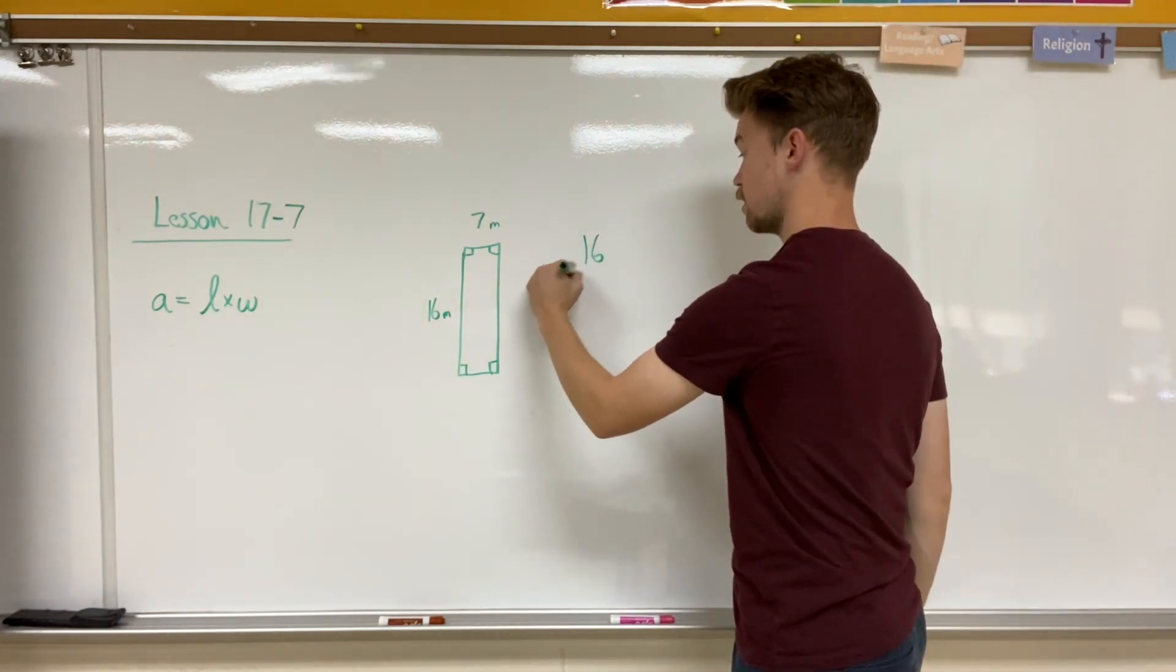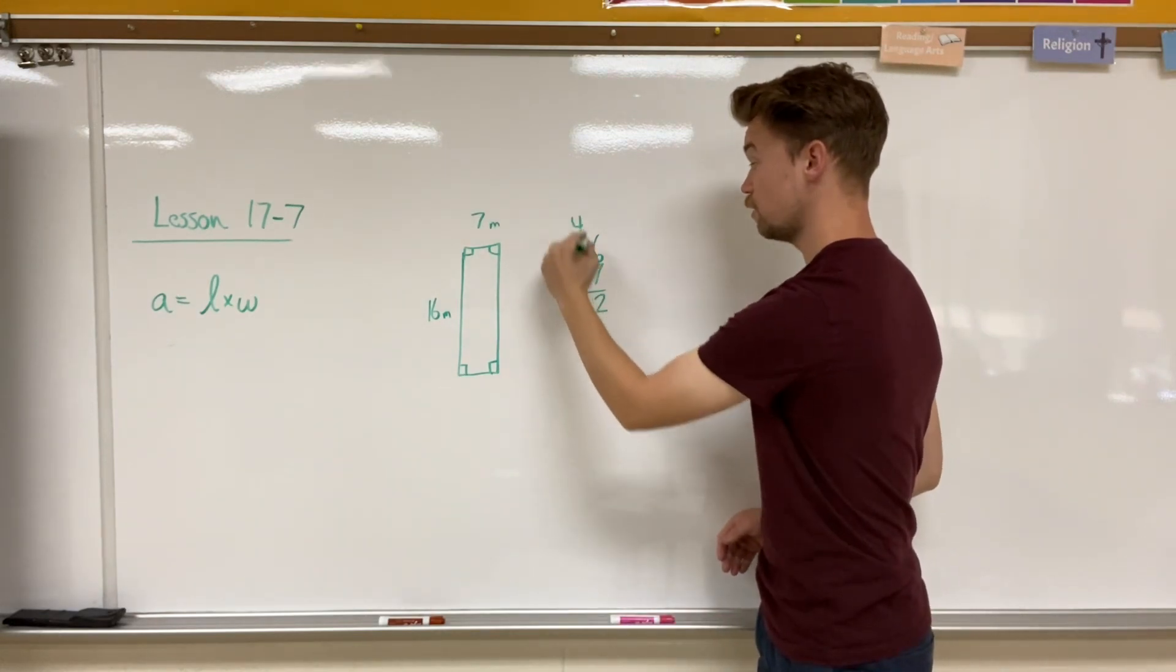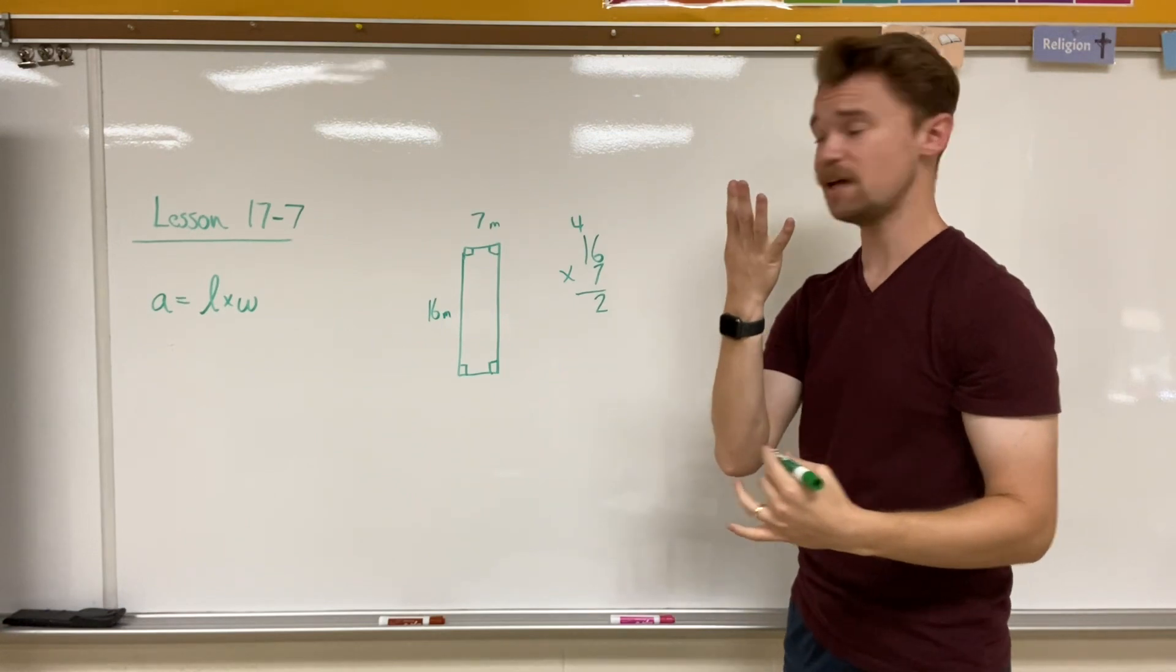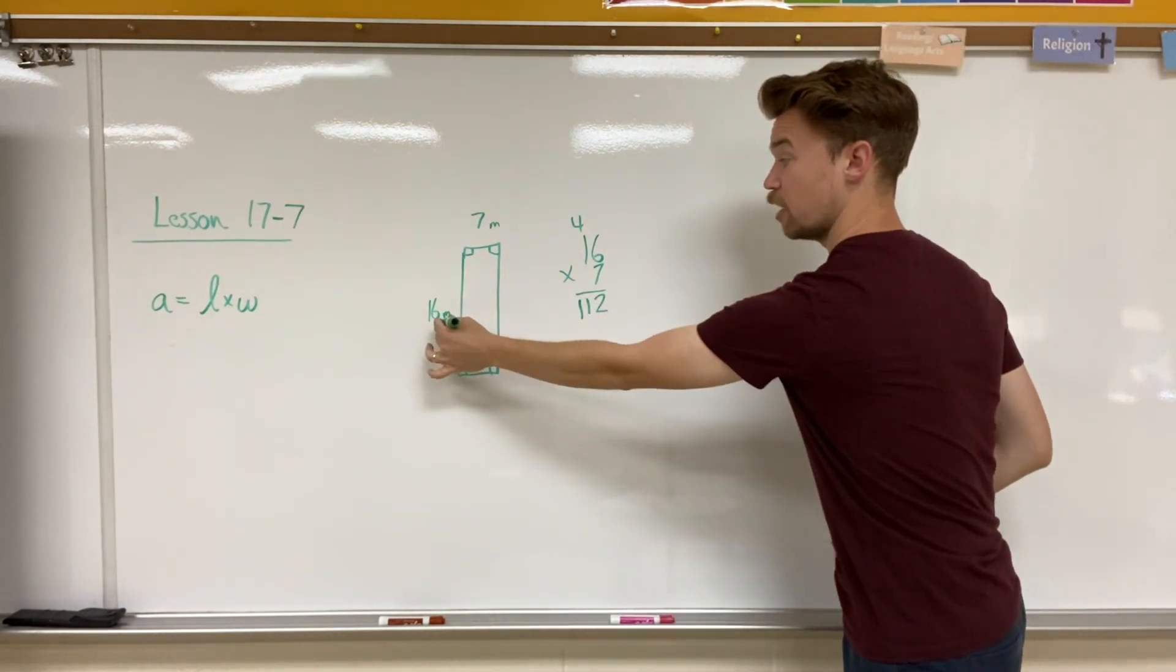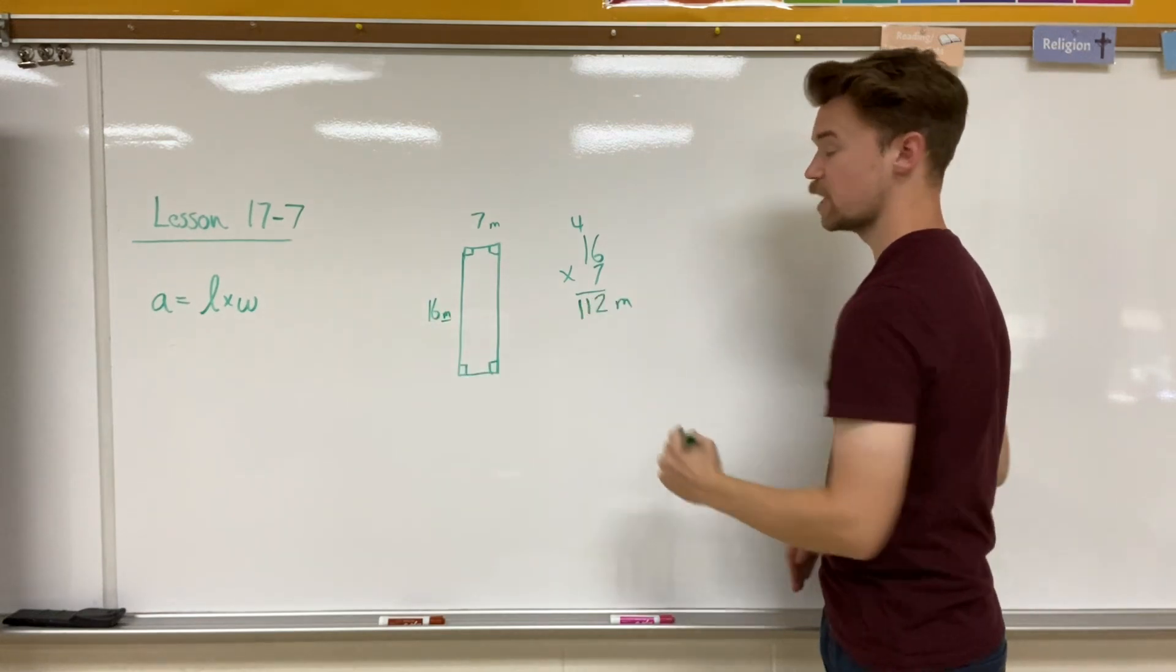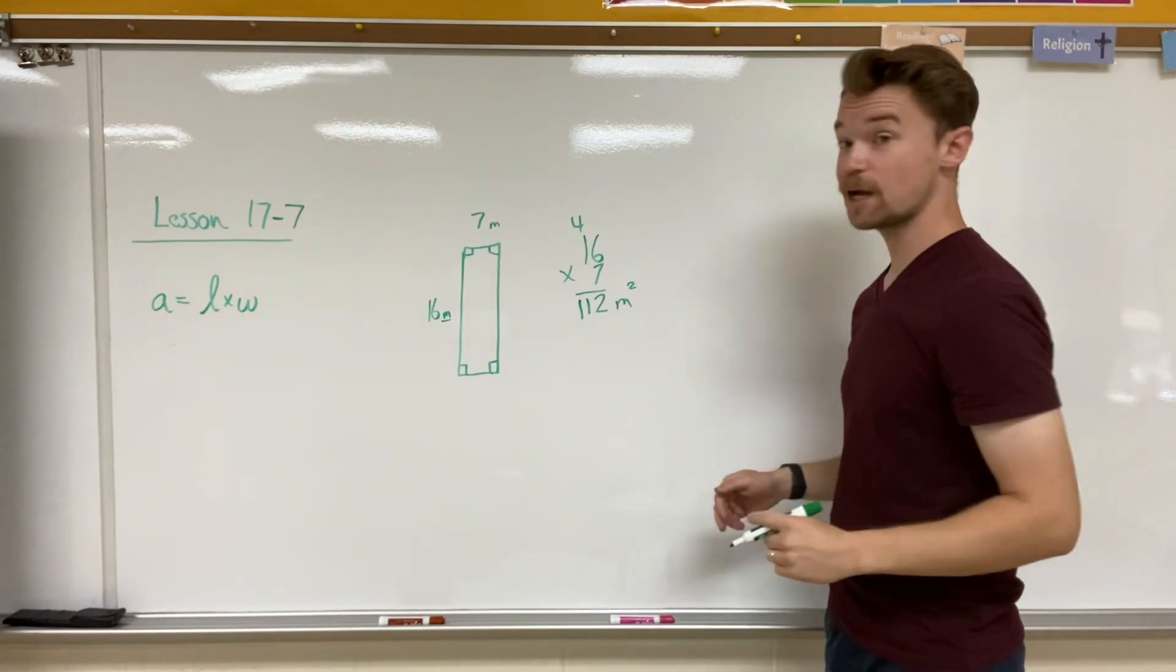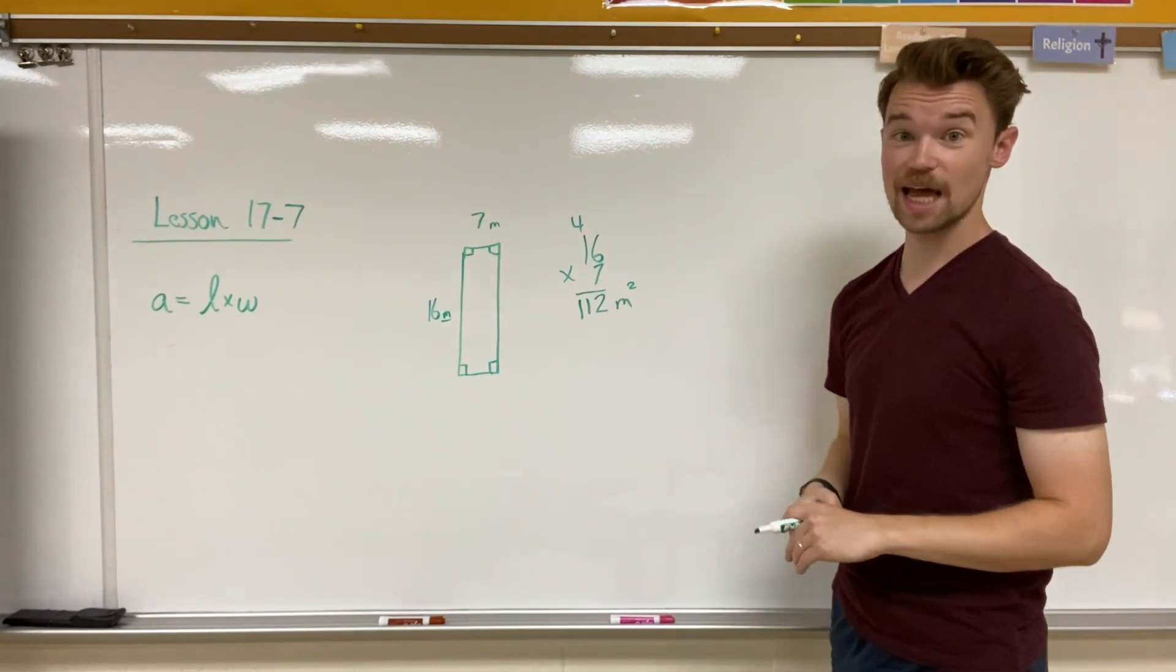So I'm doing 16 times seven. Seven times six is 42, carrying my four up to here. Seven times one is seven plus four, which gives me 112. I have to put my meters next. We need to know what measurement it is, and I'm going to be putting squared. So I can read this as 112 squared meters as my answer.